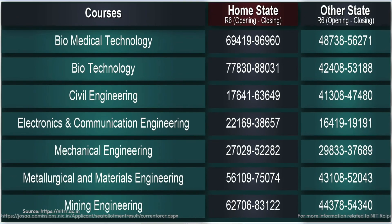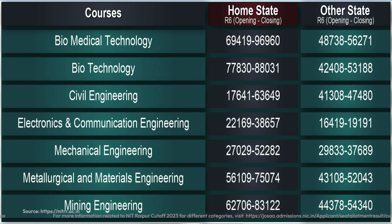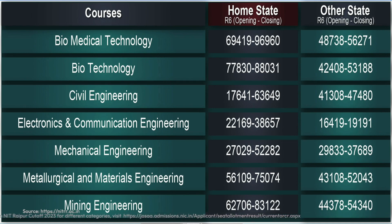Here is the branch-wise cutoff for all the other branches — you can pause the video or take a screenshot. For more information on branch-wise and category-wise rank cutoffs for ST, SC, EWS, or General students, do visit the link given in the description.